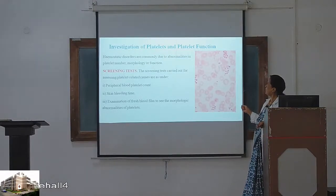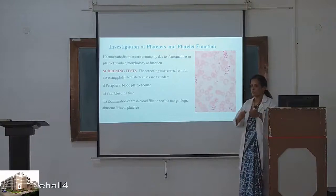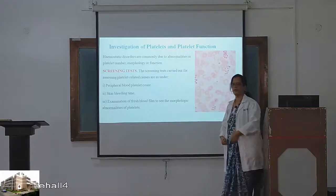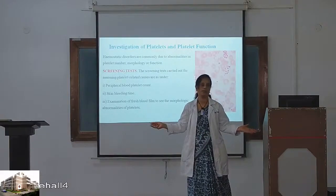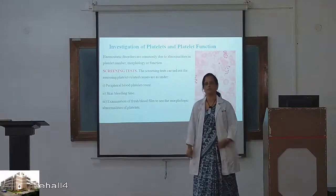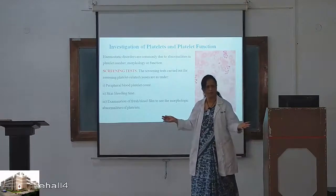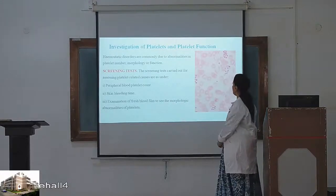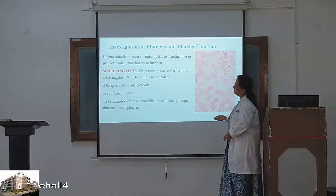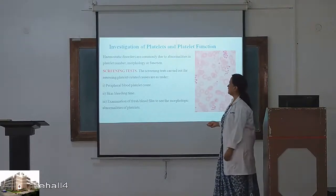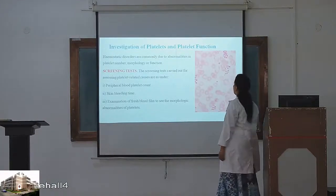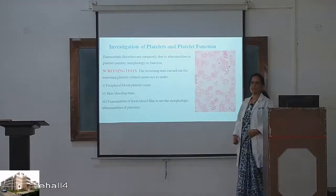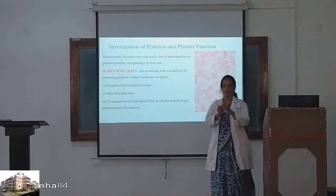Even when a machine gives a platelet count value, we definitely look at the peripheral smear for the presence of platelets. Platelets seen as aggregates in the smear reflect their function. If they are single, large, and discrete — like social distancing — that is abnormal. Platelets usually clump together in the smear. We look at bleeding time and examine fresh blood for platelet morphology, as platelets are about 2 to 4 microns in size. If a platelet is large, we call it a mega platelet — also abnormal.